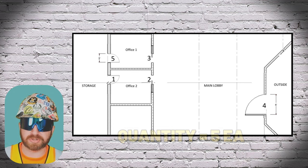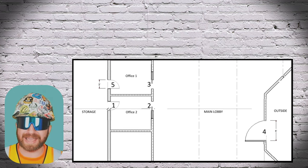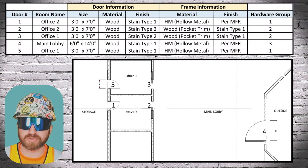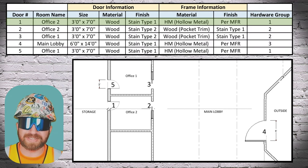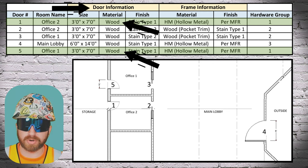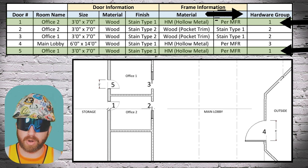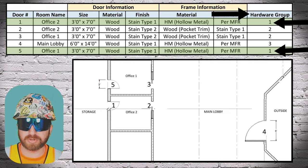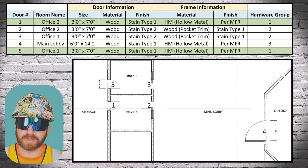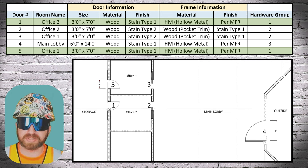This floor plan shows me a quantity but doesn't tell me much more beyond that, so I need to go elsewhere in the construction documents to gather details about these doors. In this instance, I'm going to locate the doors, frames, and hardware schedule. I can see that door number one and door number five have a hollow metal frame — they're wooden doors with hardware package number one, and both are the same.